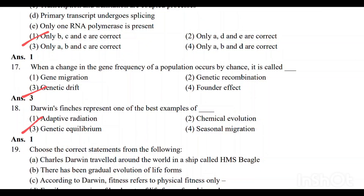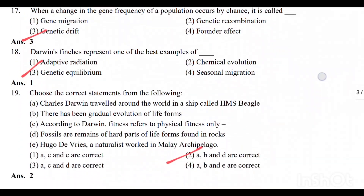Question number 17: When the change in the gene frequency of a population occurs by chance, it is called genetic drift. Option 3 is the correct answer. Question number 18: Darwin's Finches represent one of the best examples of adaptive radiation. Option 1 is the correct answer.